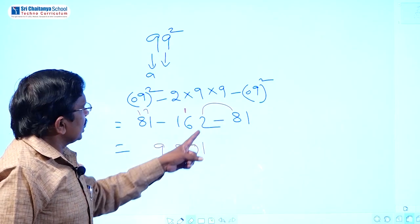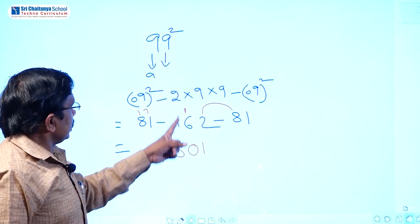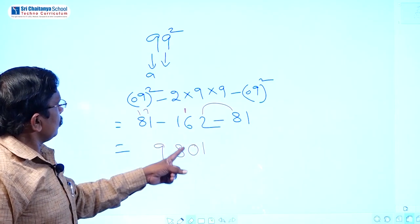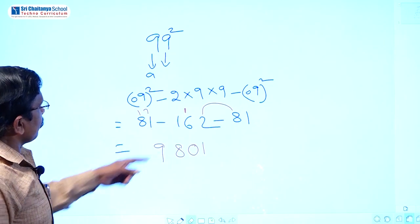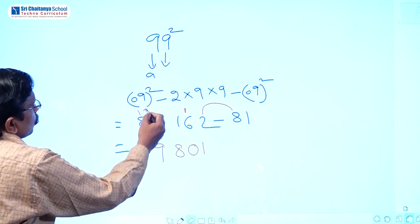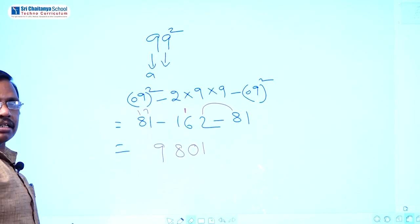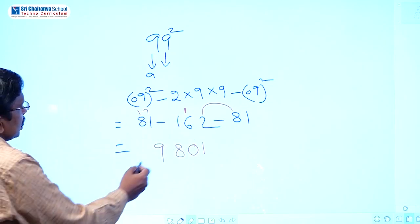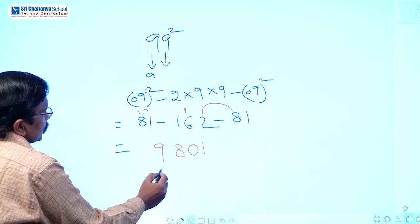Balancing: take 1 as it is. Then 8 plus 2 equals 10, so write 0 and carry 1. Then 1 plus 6 plus 1 carry equals 8. Then 1 plus 8 equals 9. So 99 squared equals 9801.